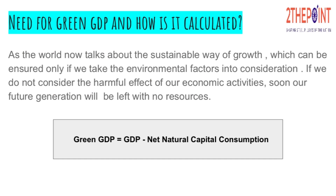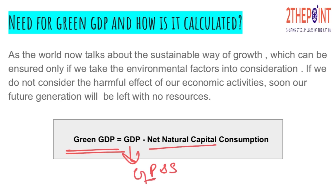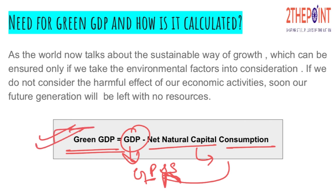Now, the need for Green GDP and how it is calculated. We definitely need this Green GDP concept because we are all striving towards a sustainable way of growth. Every international organization is reiterating that we need sustainable methods where we do not harm the environment and biodiversity is not lost. Green GDP is calculated by a simple formula: take the GDP — the value of all goods and services in the economy — and deduct net natural capital consumption, meaning whatever natural resources were consumed to produce those goods and services. The result is the Green GDP.